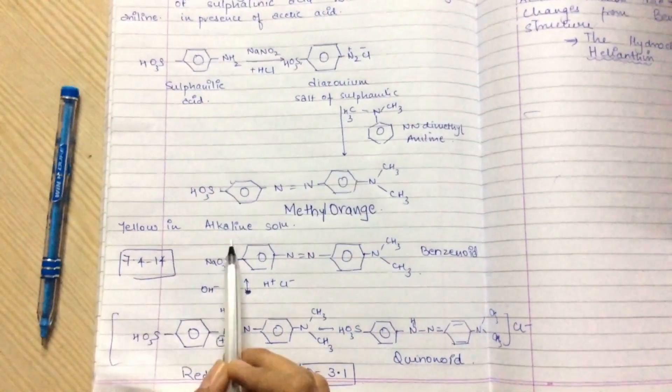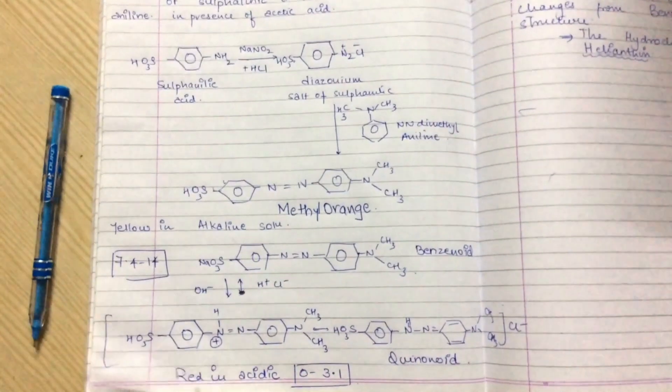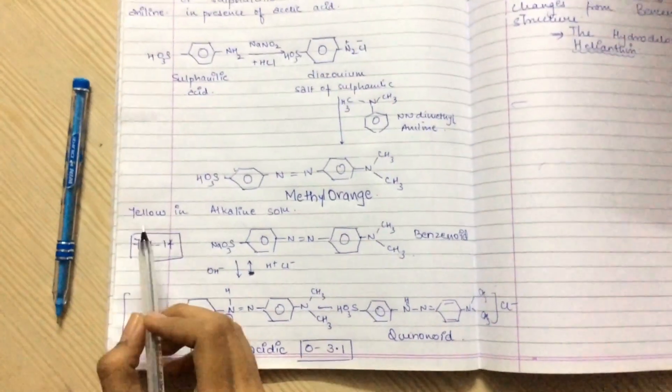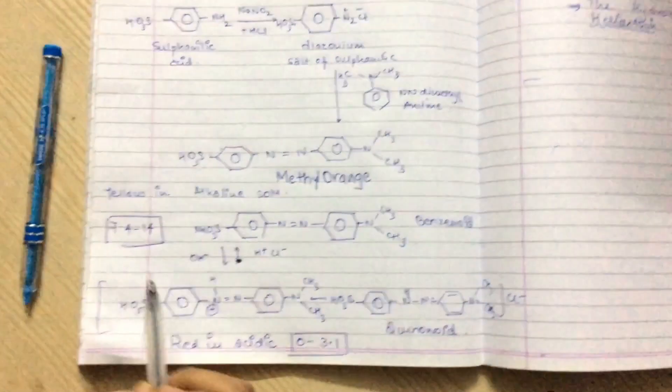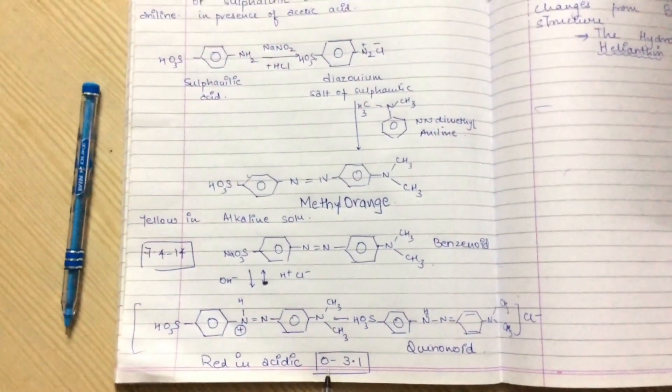Methyl orange is yellow in alkaline solution and red in acidic medium. In alkaline solution it has a pH of 7.4 to 14, and in acidic medium it has a pH of 0 to 3.1.